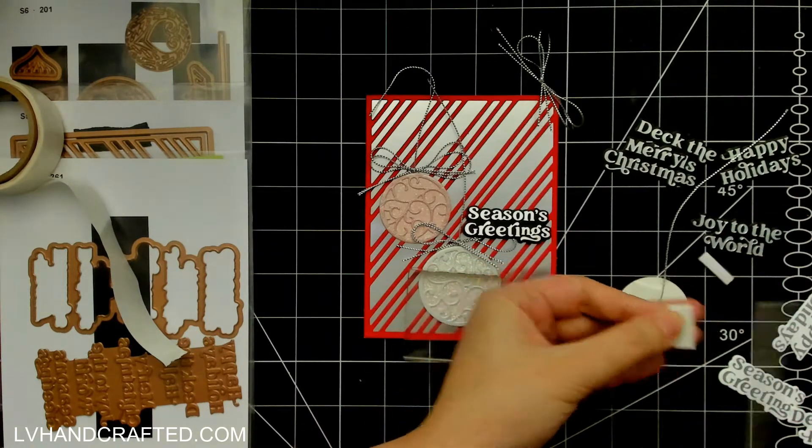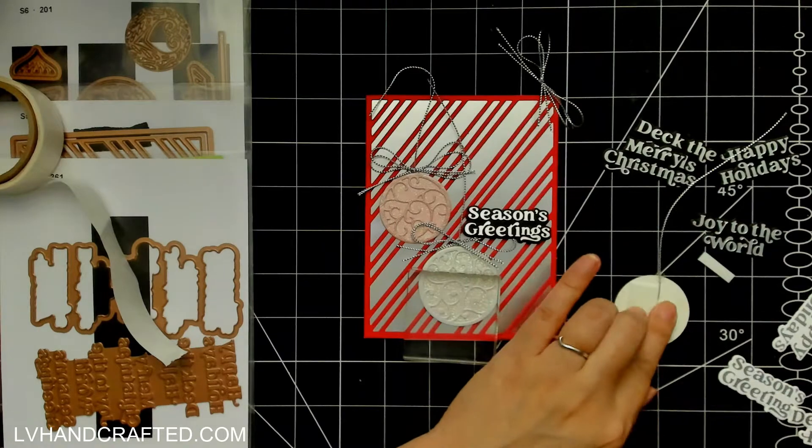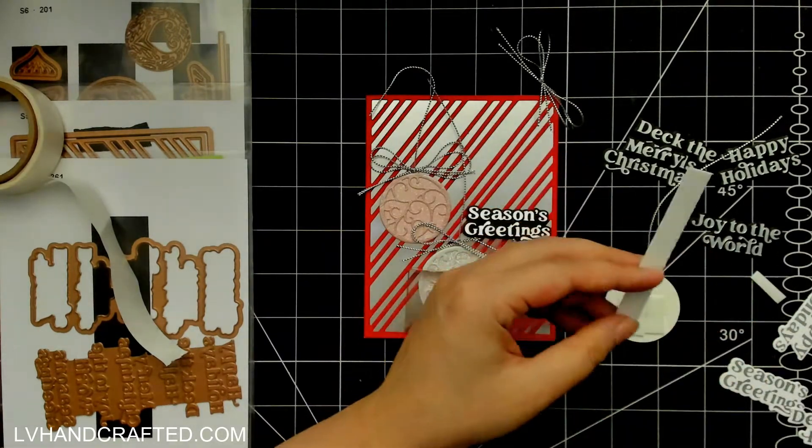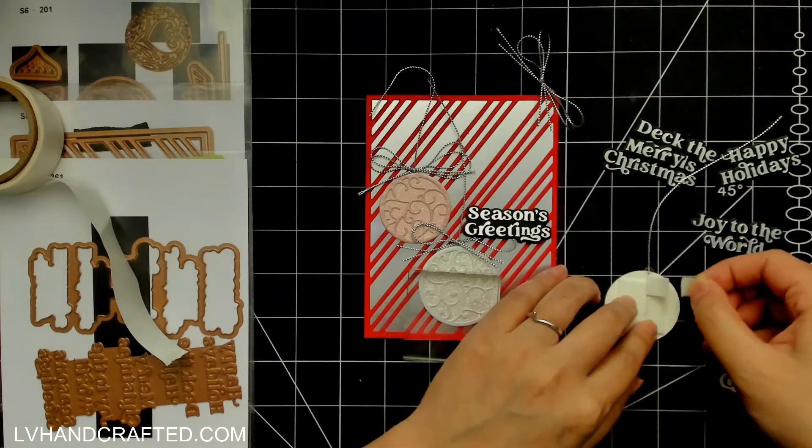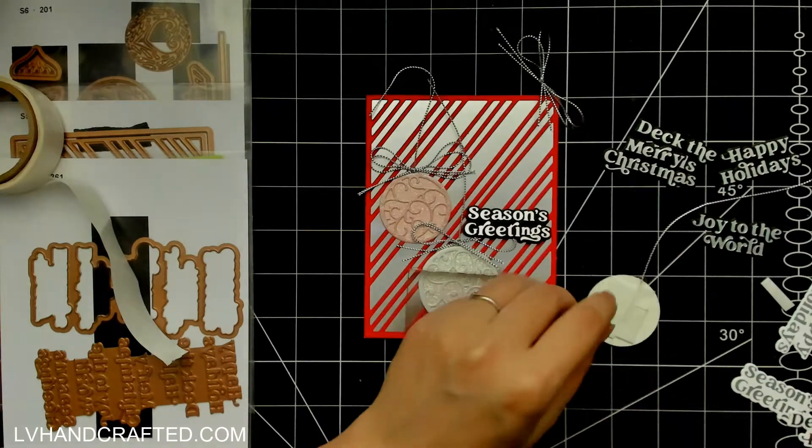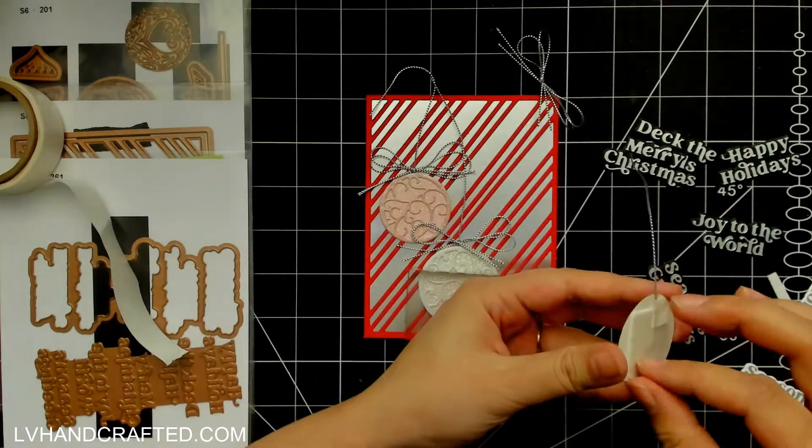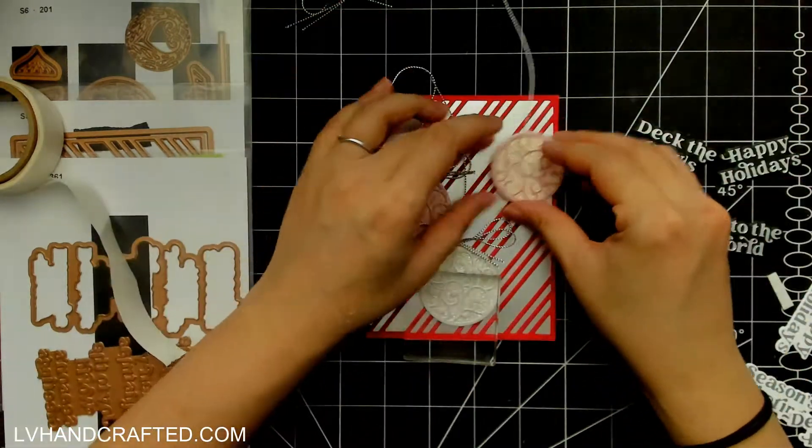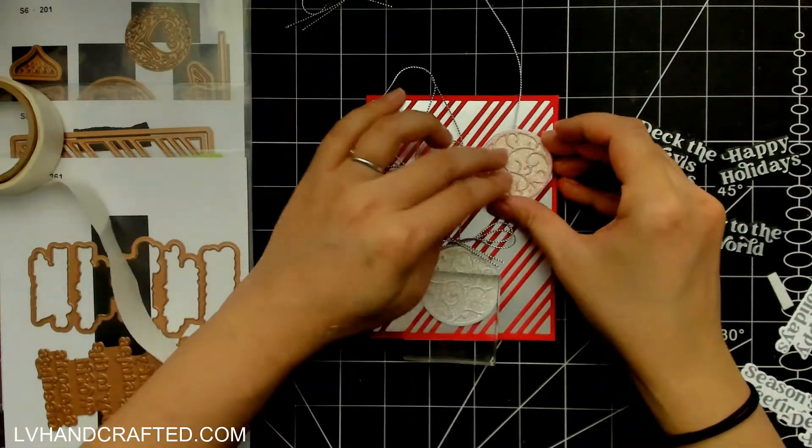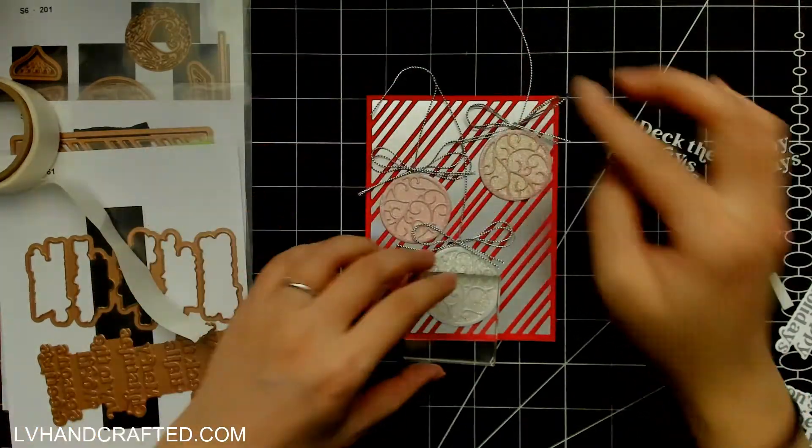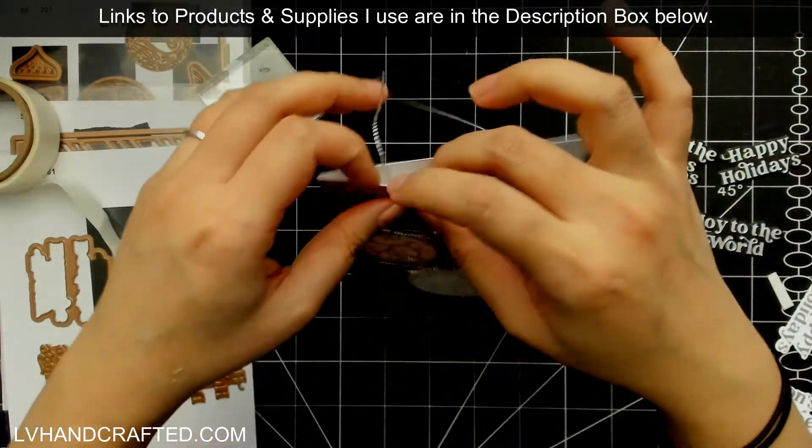But I feel like especially if you're going to glimmer and foil it it just adds even more shine and bling so I am putting a little bit of low profile foam onto some of my ornaments here I've got them staggered a little bit but I did think ahead about my sentiments and so I did make sure there was room.